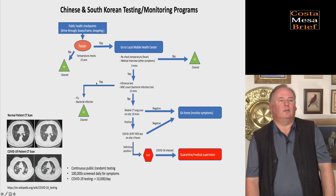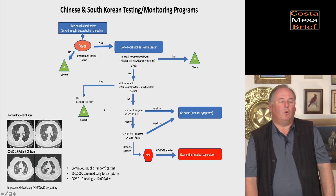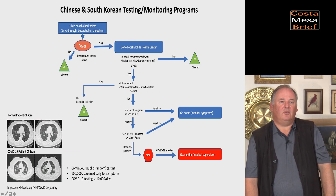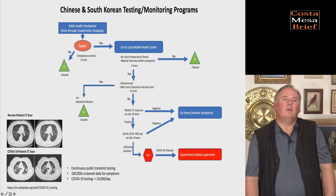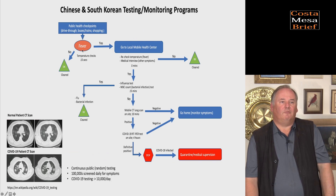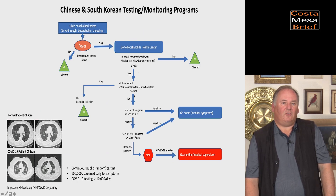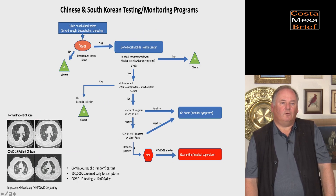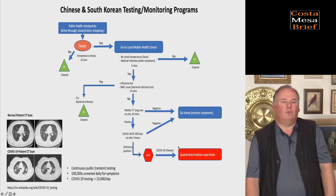One of the ways different countries have implemented testing to monitor the outbreak and set public health policies is represented here. The Chinese and Koreans look at individuals in public spaces with random tests at high-throughput places such as train stations, bus stops, and shopping centers, or through drive-through stops where they monitor people for fever. If those are positive, they're sent to a local health clinic where they conduct additional tests, rule out diseases like the flu and bacterial infections quickly, and triage people. If they test positive for COVID-19, they're directed to a quarantine center for care and treatment.